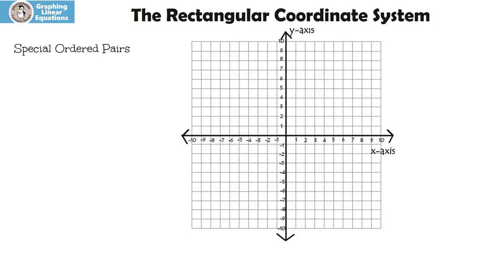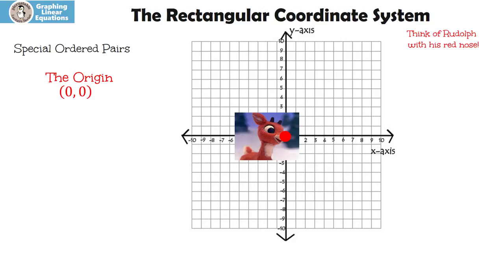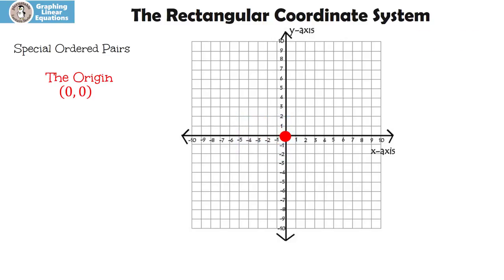Let's look at a couple of special ordered pairs. Let's look at what we call the origin. The origin is zero, zero — that's the center. How I like to remember it — and this might sound weird — I think of Rudolph with his red nose, right in the center. You're also going to remember that's how we always start an ordered pair, from the center, or the origin, zero, zero.